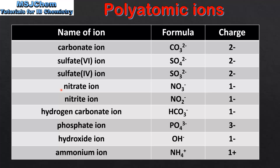Next we have the nitrate ion, which is NO3⁻. The nitrite ion is NO2⁻. The hydrogen carbonate ion is HCO3⁻. Next we have the phosphate ion, which is PO4³⁻. The final negative polyatomic ion is the hydroxide ion, which is OH⁻. The last example is the only positive ion in the list, which is the ammonium ion, NH4⁺.